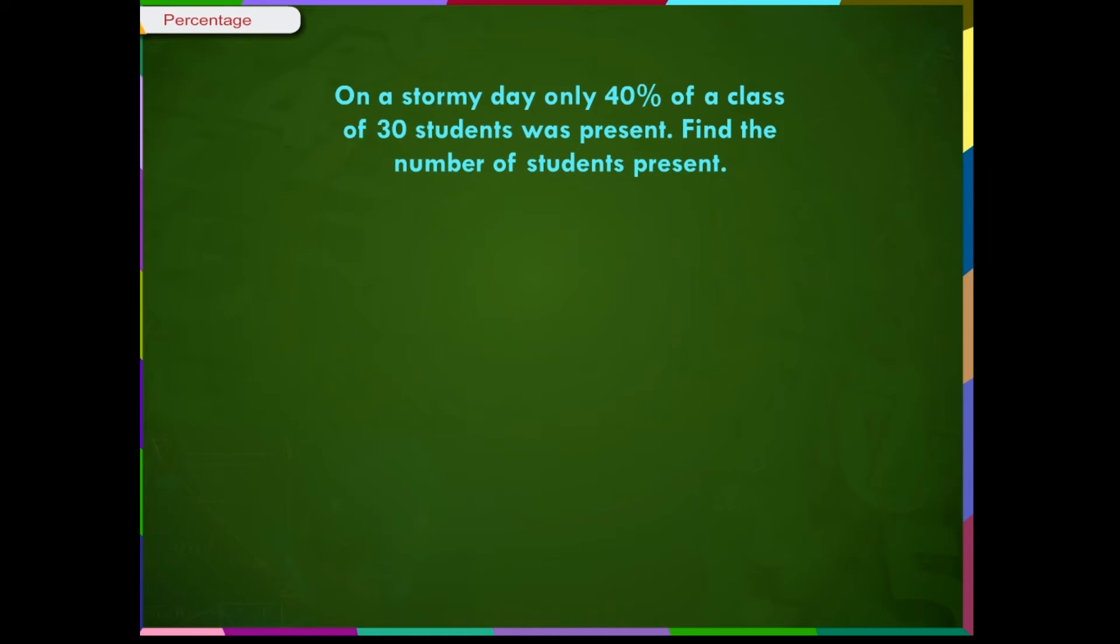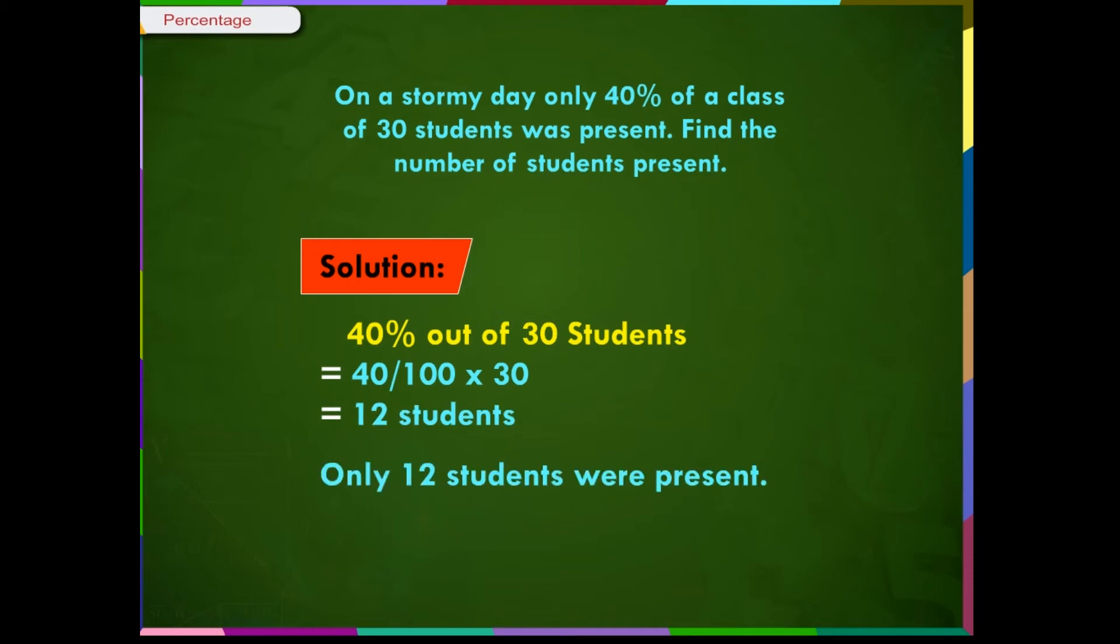On a stormy day, only 40% of a class of 30 students was present. Find the number of students present. Solution: 40% of 30 students equals 40/100 × 30 = 12. Only twelve students were present.